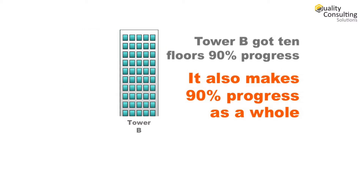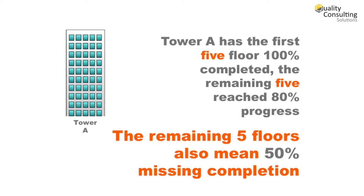Now see the other tower — there you will find all floors reaching 90% progress, making 90% of progress as a whole. Getting back to the first tower: how many floors have you already completed? Only 5. How many floors are not completed? The other 5.